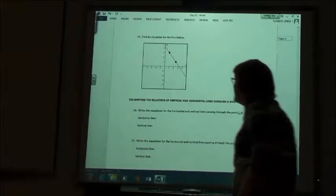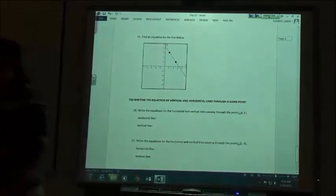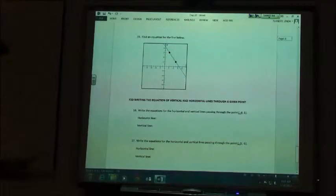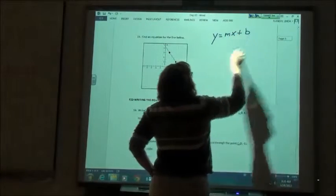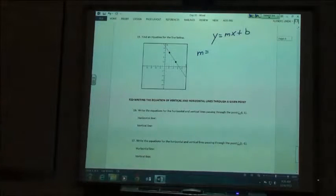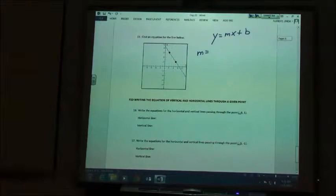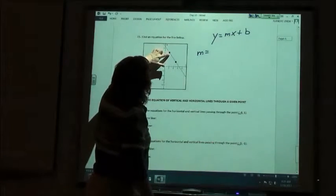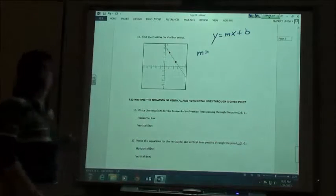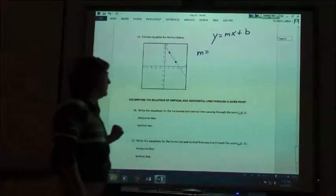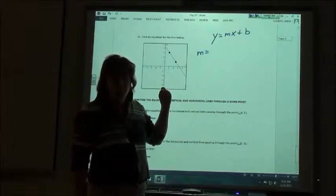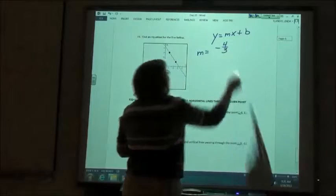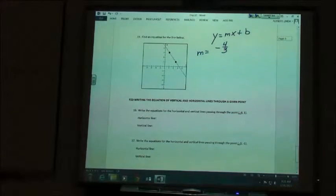All right, number 15, back to where we have a graph. So, that one's a little bit easier because we can just count our slope. We want to find that equation for that line. So, we're going to start out y equals mx plus b. And then, we're going to find our m first. Our m is going to be down 4 and over. Down 4, so it's going to be negative 4 thirds, right? So, negative 4 thirds is my m.